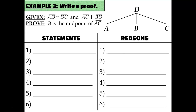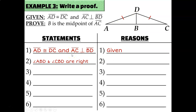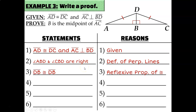For our next proof, we're told that AD is congruent to DC and that AC is perpendicular to BD. Perpendicular lines create right angles, so angle ABD and angle CBD are right angles by the definition of perpendicular lines. The two triangles also share side DB, so DB is congruent to DB by the reflexive property of congruence. Now I have enough to say those two triangles are congruent by HL — both are right triangles, their hypotenuses are marked congruent, and they have a pair of congruent legs.